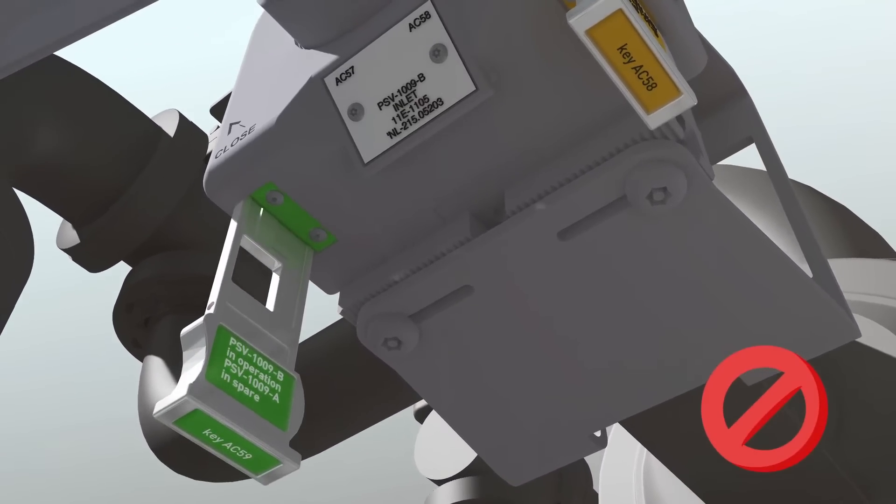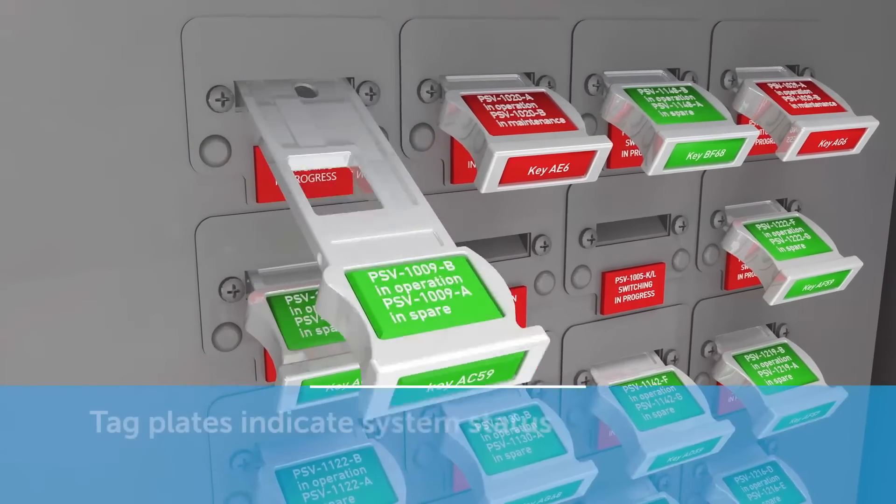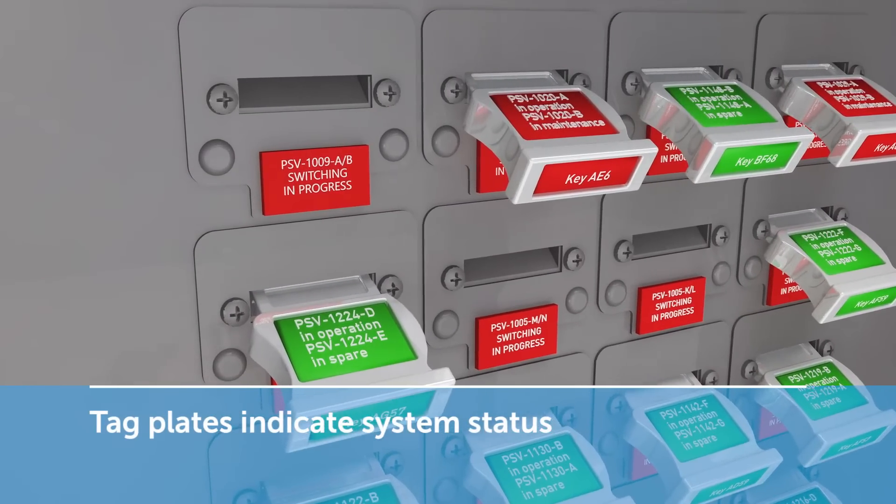When a key is removed, the cabinet tag blade shows that the valve system is being operated.